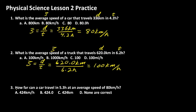For problem three: how far can a car travel in 5.3 hours at an average speed of 80 kilometers per hour? So now we're not looking for the speed — we're given the speed. We have the time, and we're looking for how far the car can travel, which means we're looking for distance. So we need to rearrange this equation using basic algebra or the magic triangle. The rearranged equation is: distance equals speed times time.